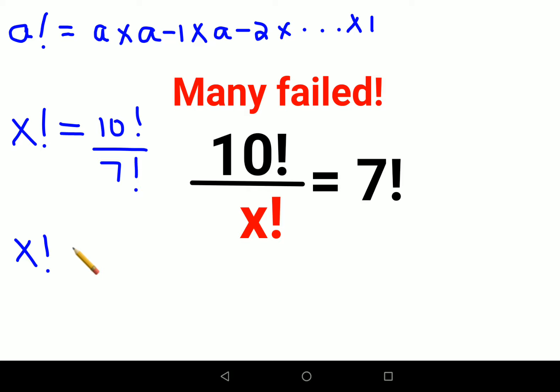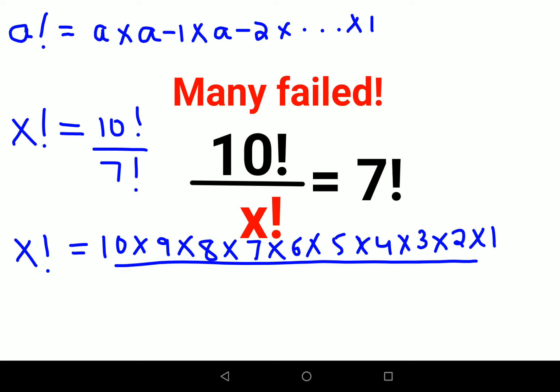So this can be written as 10 into 9 into 8 into 7 into 6 into 5 into 4 into 3 into 2 into 1, and this expansion of 7 factorial is nothing but 7 into 6 into 5 into 4 into 3 into 2 into 1.